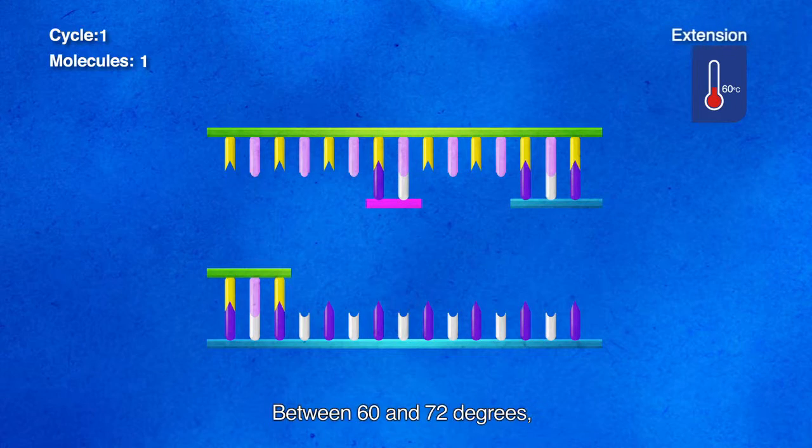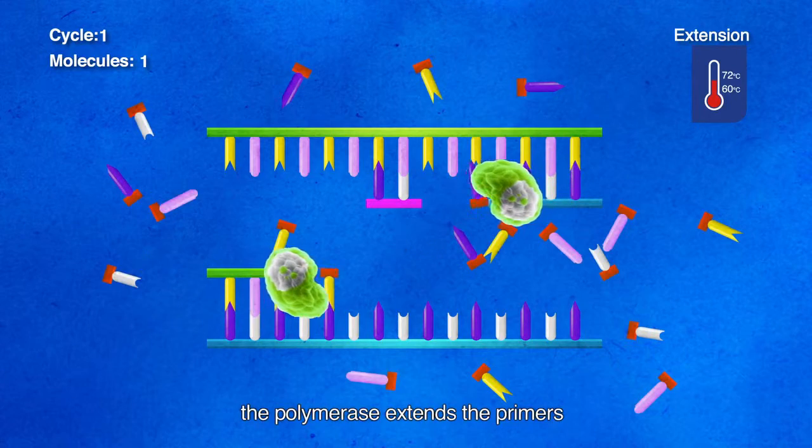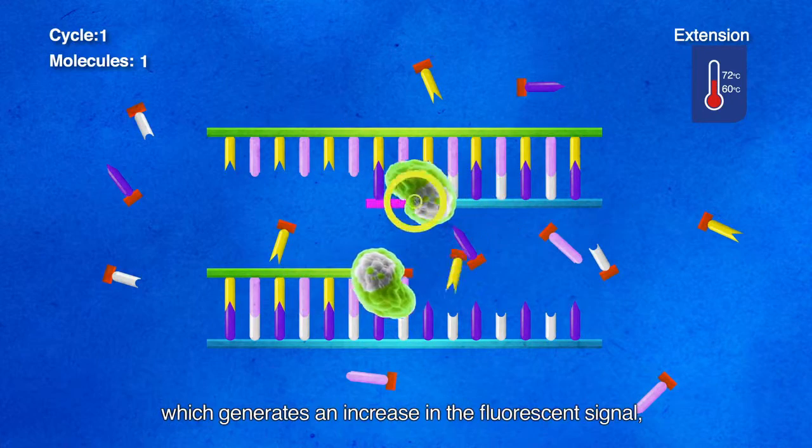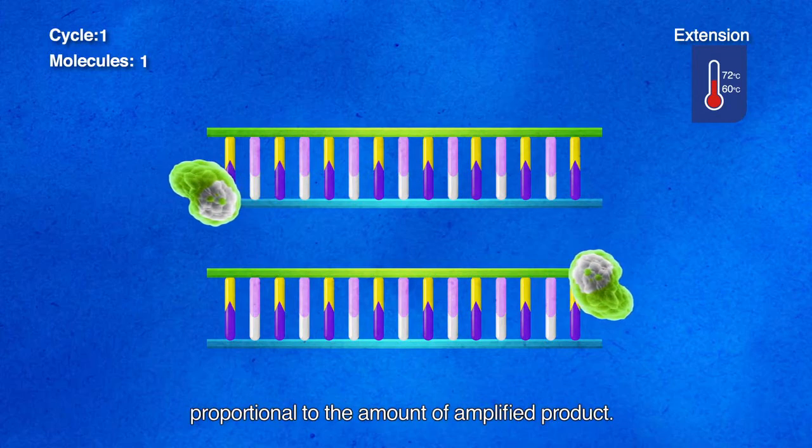And third, extension. Between 60 and 72 degrees, the polymerase extends the primers and cleaves the probe, which generates an increase in the fluorescent signal proportional to the amount of amplified product.